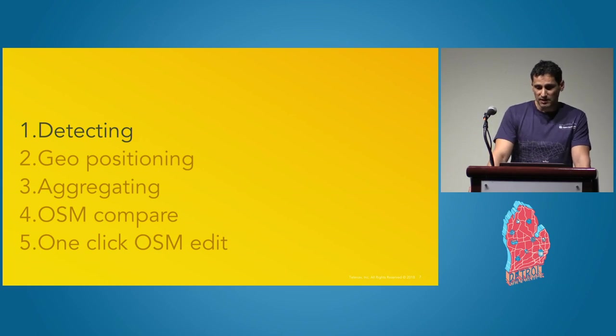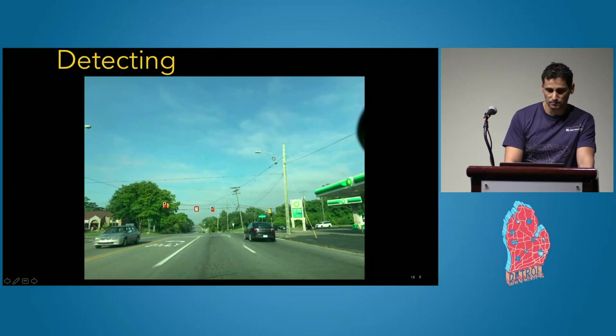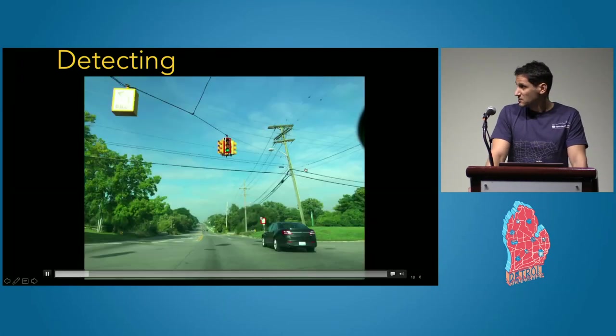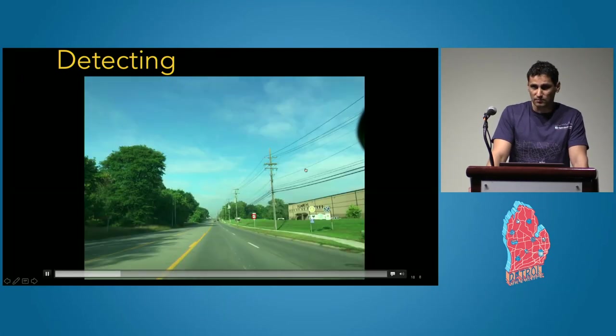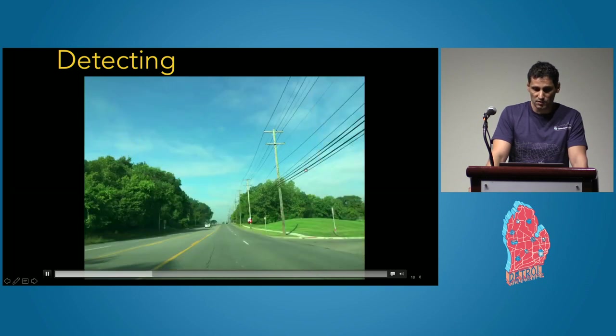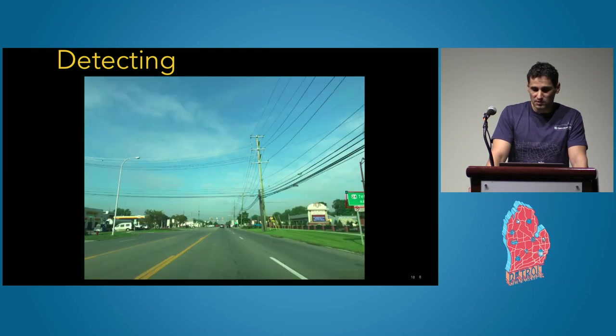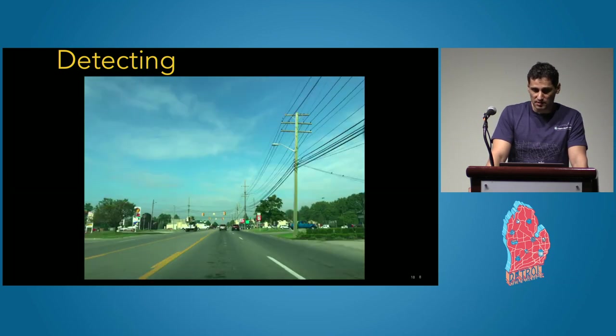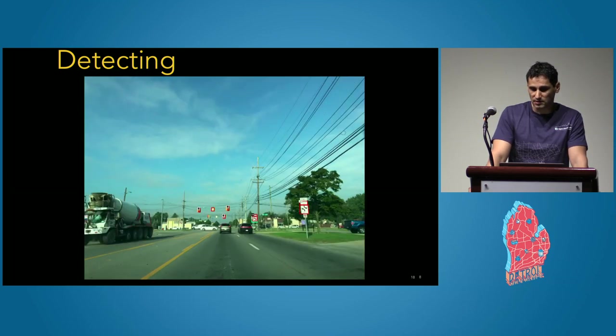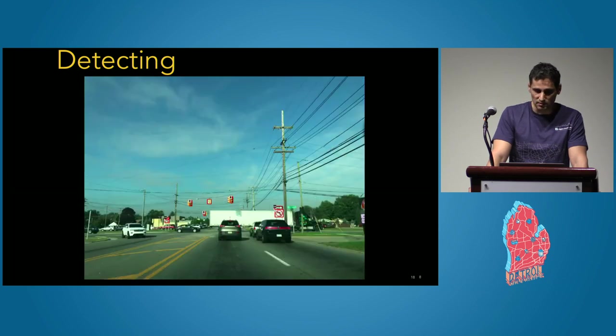Let's start with the first step, which is detecting traffic signs from the pictures. For that, I've just picked a random trip from Detroit from OpenStreetCam, which, by the way, is our platform for collecting images. Here we can visualize detecting traffic signs like speed limits, do not enter signs, stop signs, and so on.